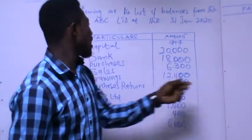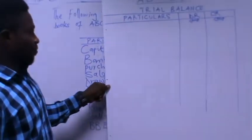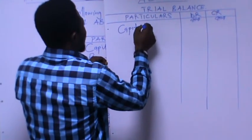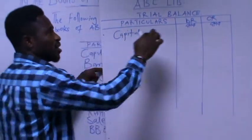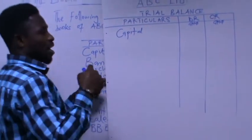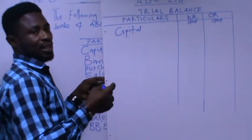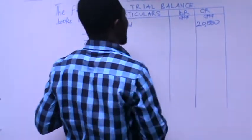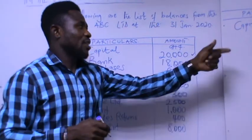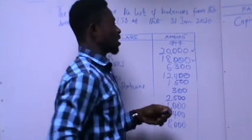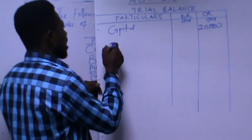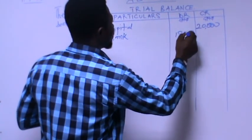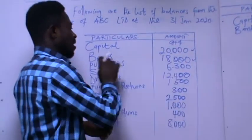Starting with the capital account — capital is a liability to the organization and has a credit balance, so we put 20,000 on the credit side of the trial balance. Next, the bank account of 18,000, which is a current asset with a debit balance, so we put bank with 18,000 on the debit side.